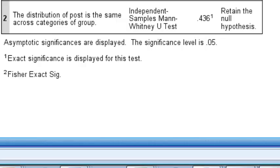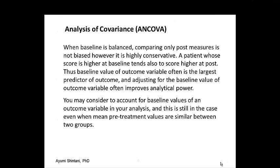Many people might write up the summary report and call this a negative study. But before you do that, consider one more thing: how about adjusting for baseline? You might think — since randomization seems to provide balance at baseline — why do you need to adjust for baseline? Let's talk about whether there's any benefit to adjusting for baseline using a method called analysis of covariance.